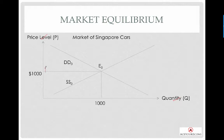Normally, we will denote P0 and Q0. But right now, I'm trying to simplify things by using a numerical example. So right now, the equilibrium price for Singapore car is $1,000 at $1,000 quantity.